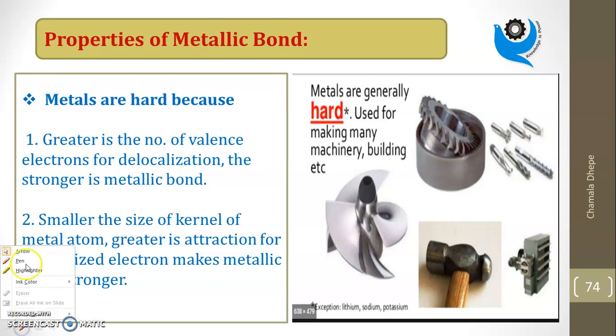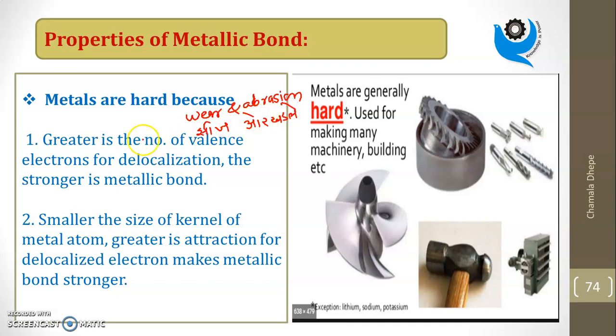First property is metals are hard. Why are metals hard? Do you know what hardness is? Hardness means it is the ability of metal to resist wear or abrasion. Wear or abrasion means easily scratching or cutting. So metals are hard - it is the ability of the metal which resists wear and abrasion.